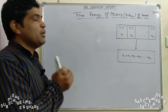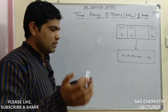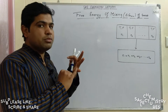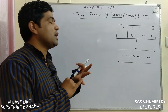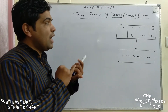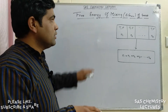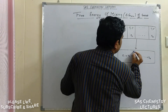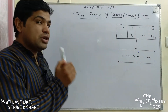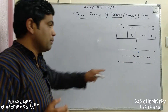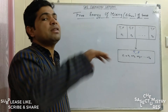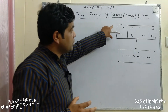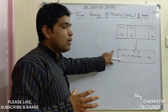First, we have to understand the concept of mixing of gases. When we consider many gases with n1, n2, and n3 number of moles, one thing should be remembered: all the gases should have the same temperature and pressure. When they are mixed together with different numbers of moles, we get a mixture that also has the same temperature and pressure, but the total number of moles is the sum of all individual moles.